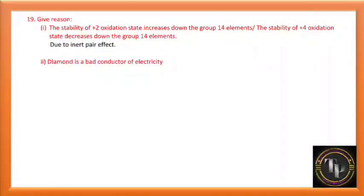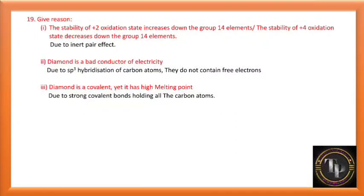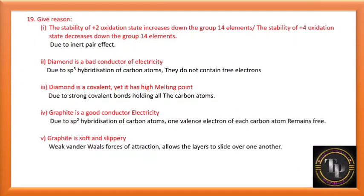Diamond is a bad conductor of electricity due to sp3 hybridization of carbon atoms — there are no free electrons, so it does not conduct electricity. Diamond is covalent yet has a high melting point due to strong covalent bonds holding all carbon atoms. Graphite is a good conductor of electricity due to sp2 hybridization — one valence electron of each carbon atom remains free to conduct electricity. Graphite is soft and slippery because weak van der Waals forces allow the layers to slide over one another.